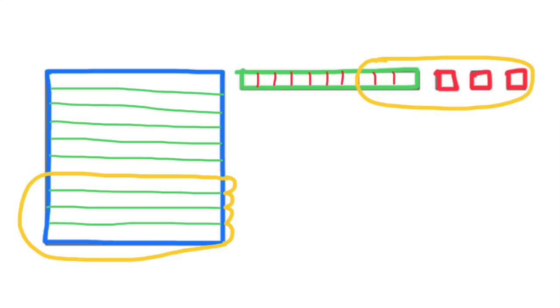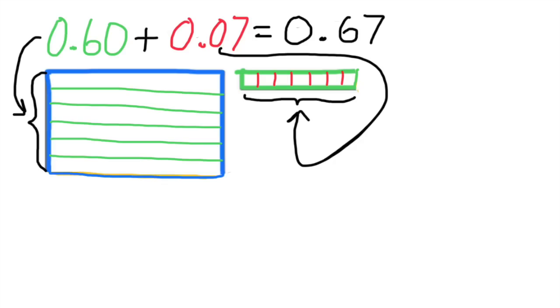I've outlined 4 tenths in yellow and 6 hundredths in yellow. And since we're subtracting them, we'll remove them from the group. That leaves us with 6 tenths or 60 hundredths plus 7 hundredths. 60 hundredths plus 7 hundredths equals 67 hundredths. So the answer is 1.13 minus 0.46 equals 0.67.